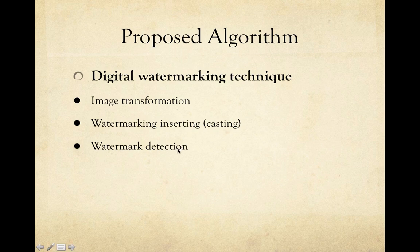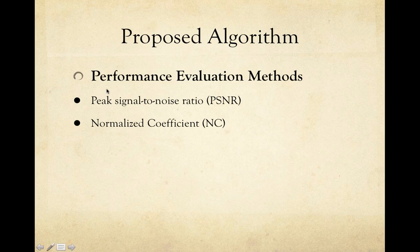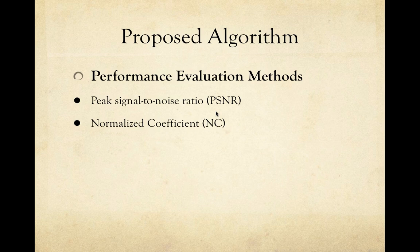For watermark detection, the original image is not required, because the watermark data is always embedded into the same set of coefficients. We apply 2D-IDCT to the 8x8 sub-blocks to recover the watermark. The two performance evaluation methods are Peak Signal-to-Noise Ratio (PSNR) and Normalized Coefficient (NC). PSNR measures the distortion of the embedding process and the similarity between the recovered watermark and the original watermark.